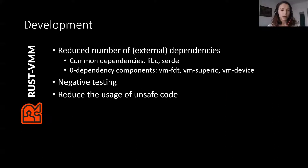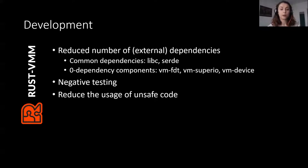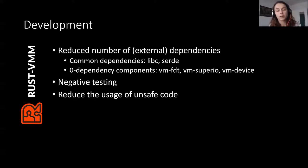In terms of development, one of the things we are looking at is reducing the number of external dependencies. This can start a long debate, but let's just say that what we are trying to do is use common dependencies that we can trust. Most of the RustVMM components have dependencies on a few crates, and these crates are libc and serde.